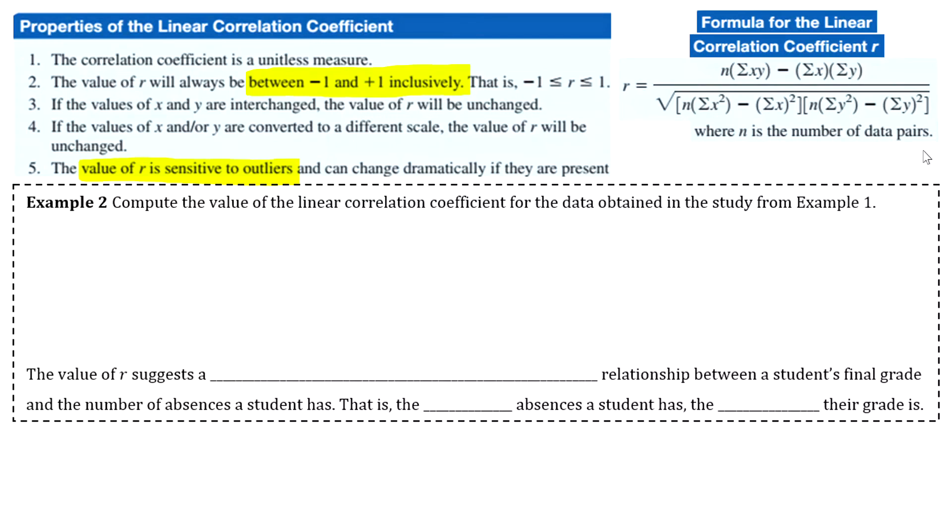So example two says to compute the value of the linear correlation coefficient for the data from example one. We're going to be sticking with that data set from example one for this entire chapter, all of chapter 10. So I'm going to put in words what we're going to do in our calculator, and then I'll actually pull the calculator up on the screen and show you. So by default, your calculator actually does not calculate what R is. So just one time, we're going to have to go into all of our calculators and turn something on. And then from there on, we should be good. You won't have to do it again the rest of the semester unless you end up resetting your calculator at some point. Then you would have to go back through this process.